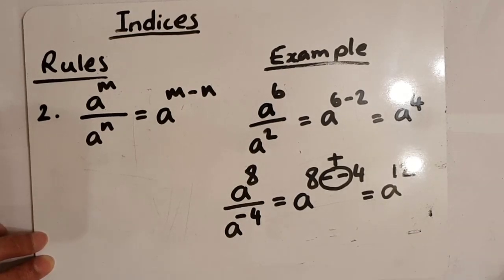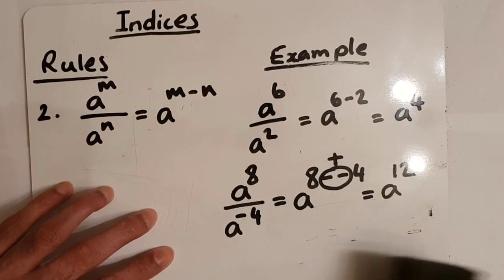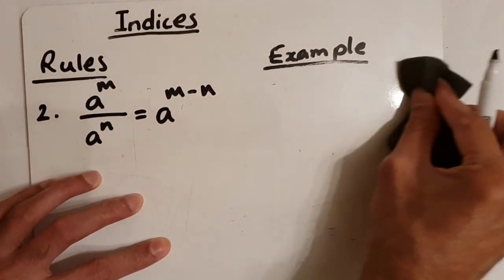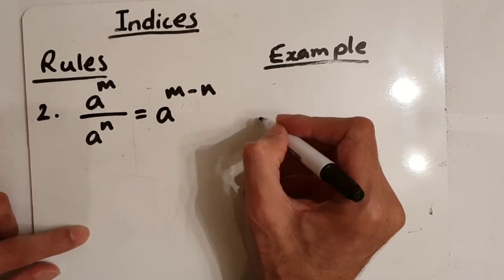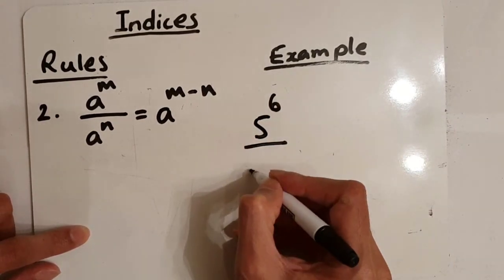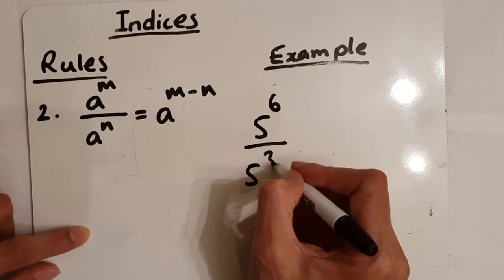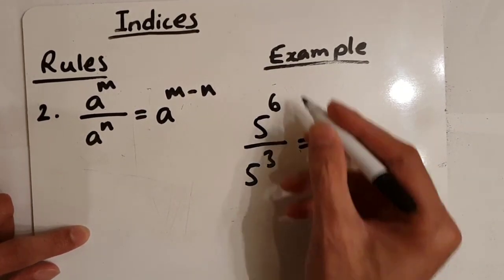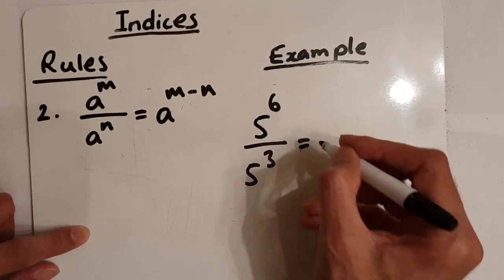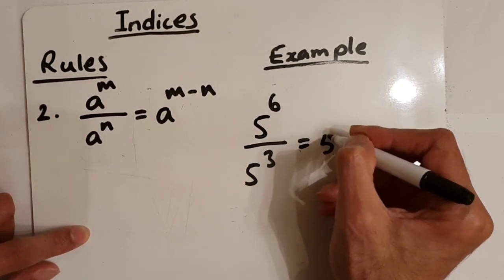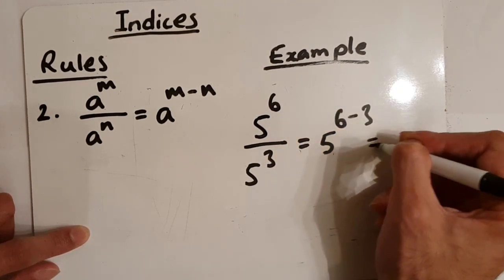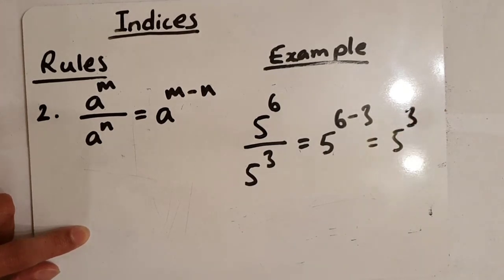Let's have a look at one more example using numbers. We have five to the power of six divided by five to the power of three. Dividing means take away the powers. If the question says write the answer as a single power of five, it would be five to the power of six take away three, which gives us five to the power of three.